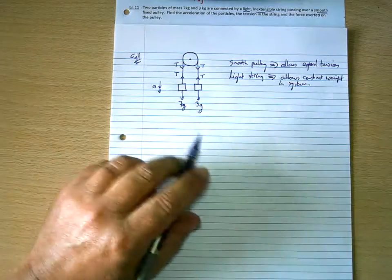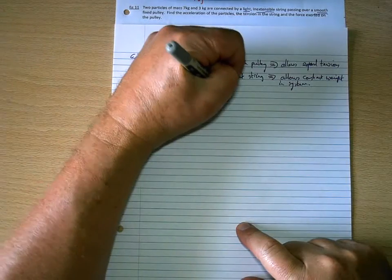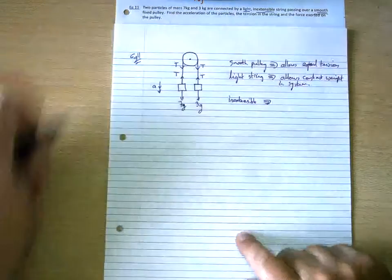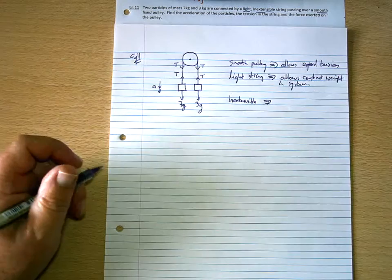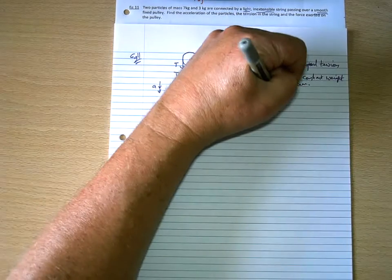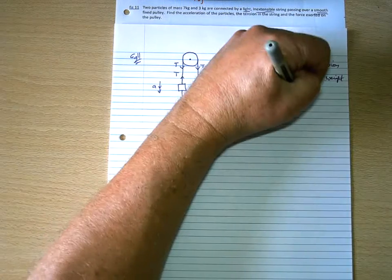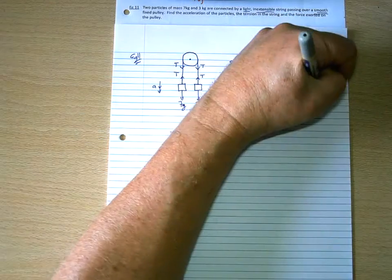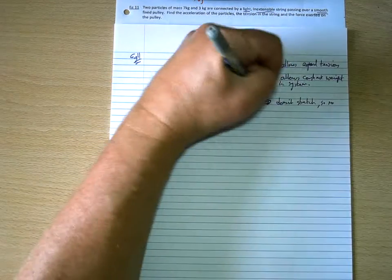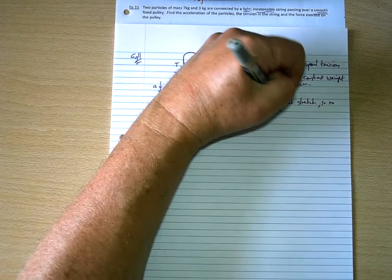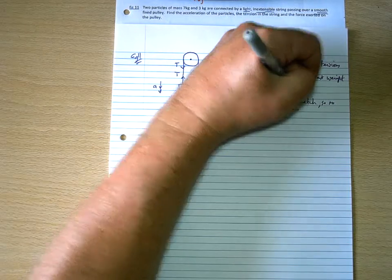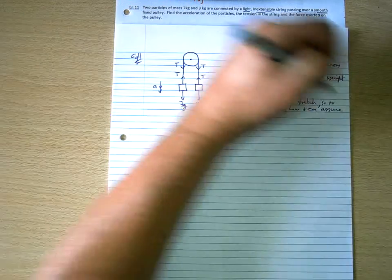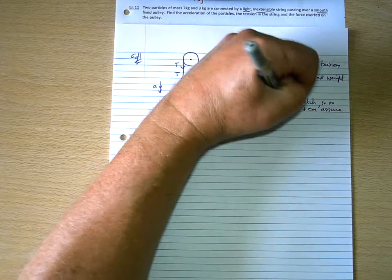Okay, and then finally, the inextensible part of the string means it doesn't stretch. So, you haven't got to worry about Hooke's Law. And that allows us to have a constant acceleration. So, no Hooke's Law. And can assume constant acceleration.